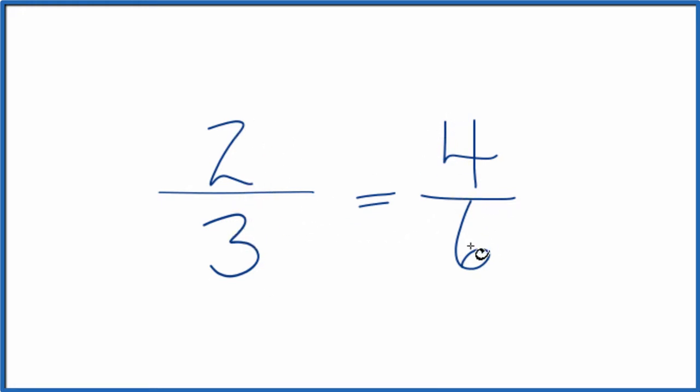If you divide 2 by 3 or 4 by 6, you get the same decimal answer. They're equivalent ratios.